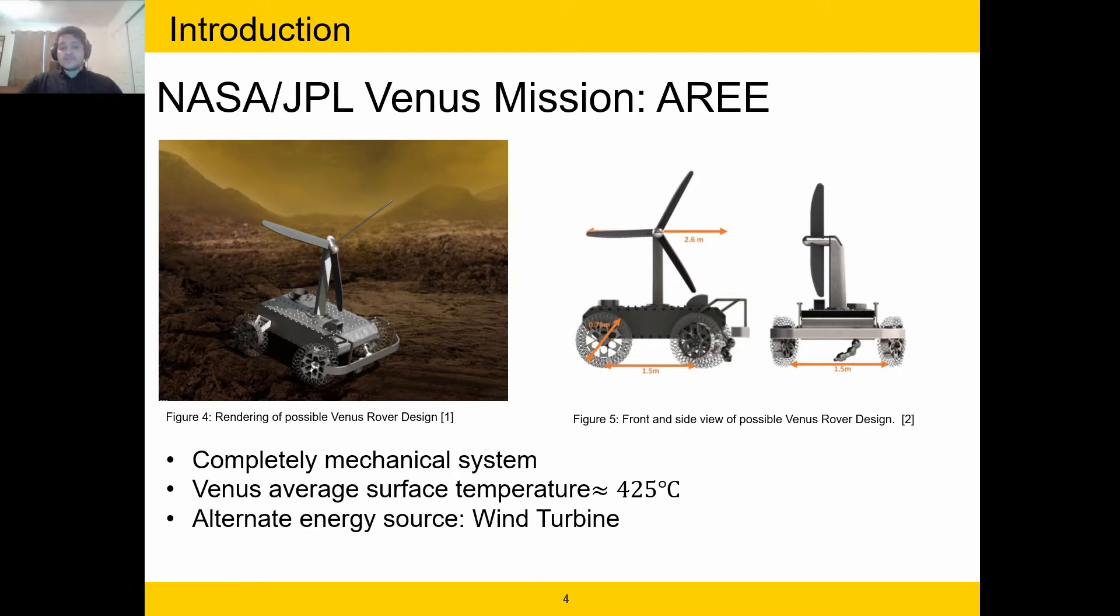The team is taking part in the NASA JPL Venus mission named Autonomous Rover for Extreme Environments, or AREE for short. The project was actually proposed by the team's liaison, Dr. Jonathan Sautter, back in 2016. This project proposes to send a rover to the surface of Venus in the near future. The main challenge that this rover faces is the extreme temperatures of the planet. The average surface temperature of Venus is 425 degrees Celsius. This makes most modern technology and electronics virtually useless for this project, making the system itself nearly a completely mechanical one.